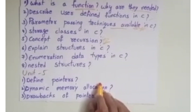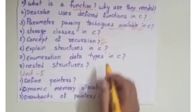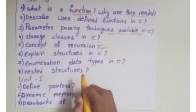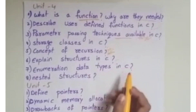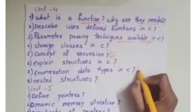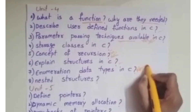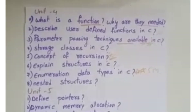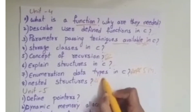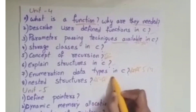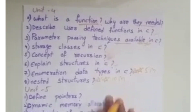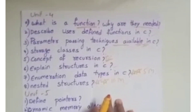Explain Structures in C. Structures and Unions concepts, and Enumeration Data Types in C — these are important questions: 5-mark and 10-mark questions. There are 8 questions in Unit 4 total.